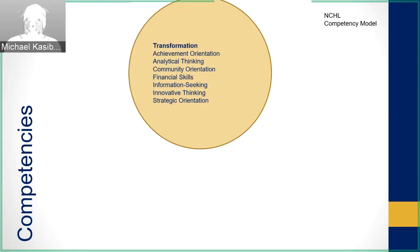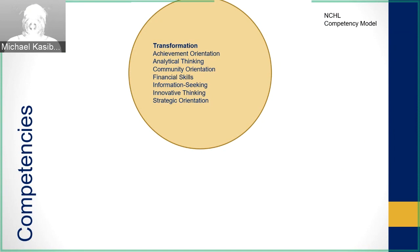When you come to the program, we want you to learn specific competencies. The first big category is transformation — we want you to be a transformative leader with analytical thinking, financial skills, innovative thinking, achievement orientation, strategic orientation, and community orientation.